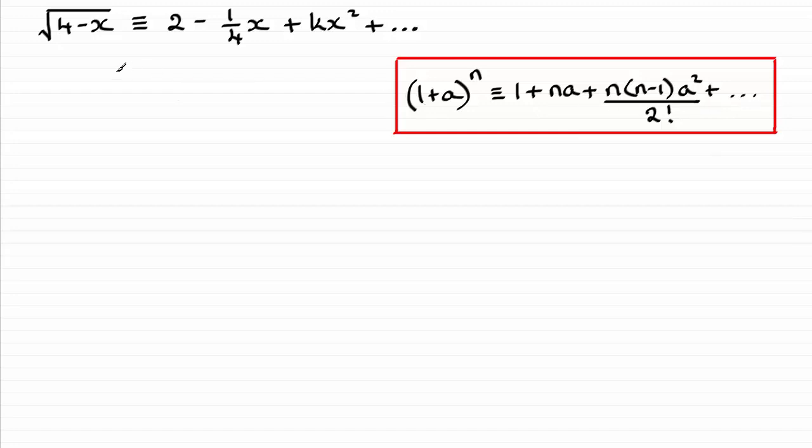Now, what I need to do though is get this in this form here where it starts with a 1. So, let's just handle that bit first of all. Let's take the square root then of 4 minus x and we represent this as a power as (4-x) all to the power half.